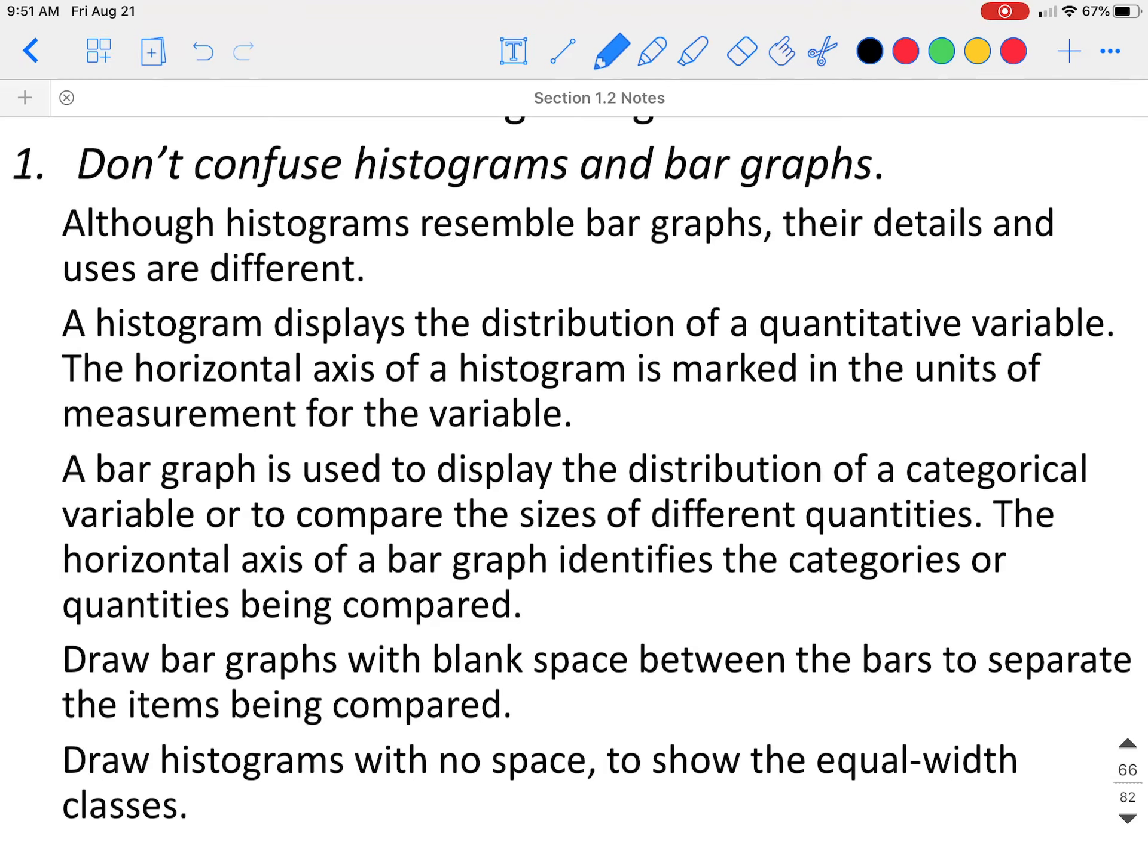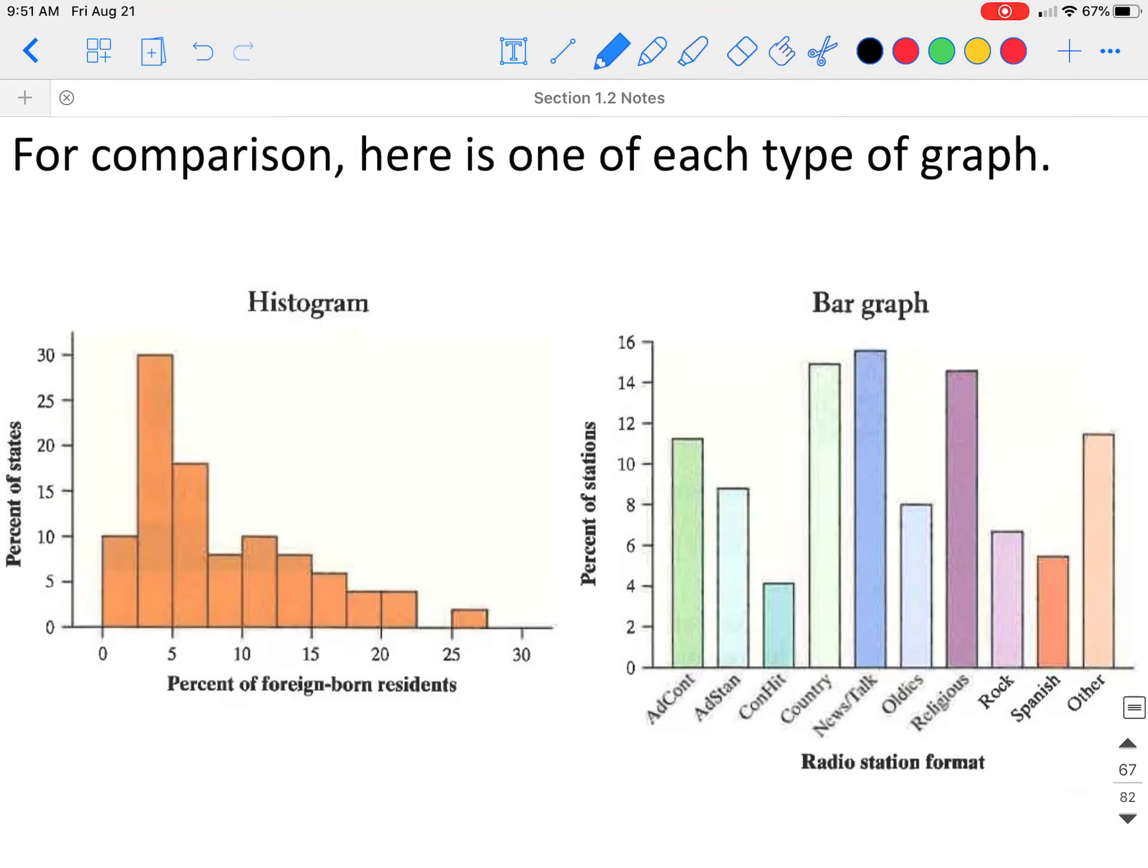A bar graph, on the other hand, is used to display distributions of categorical variables or to compare the sizes of two quantities. The horizontal axis on a bar graph identifies the categories or the quantities that are being compared. When you draw a bar graph, we leave spaces between the bars to separate them. When you draw a histogram, there are no spaces to show the equal width of the classes.